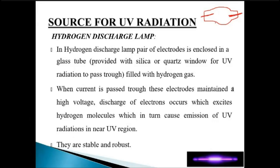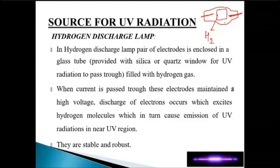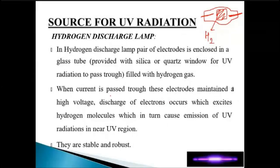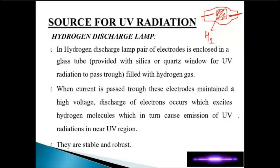You can imagine this instrument as a bulb filled with hydrogen gas. The UV light generated inside cannot pass through glass, so the window has to be made of fused silica. When current is passed through the electrodes maintained at high voltage, a discharge of electrons occurs which excites hydrogen molecules, which in turn cause emission of UV radiation in the near UV region.